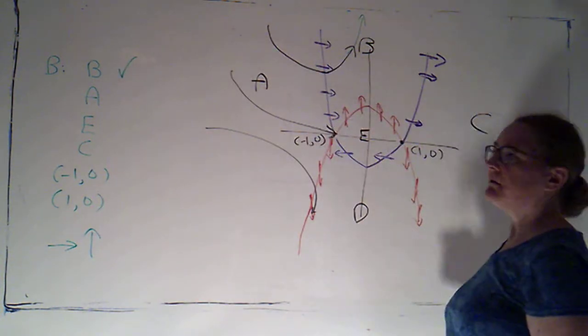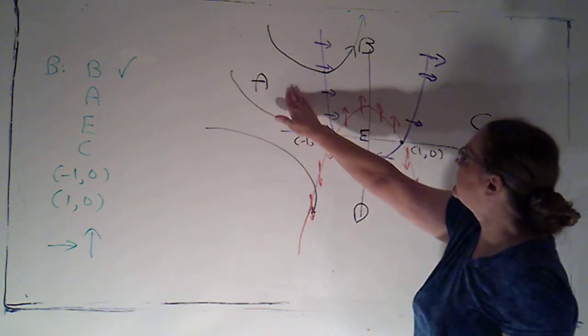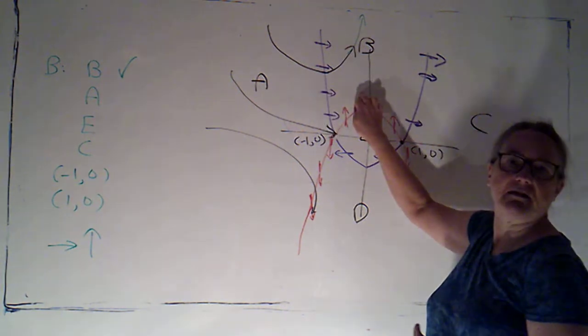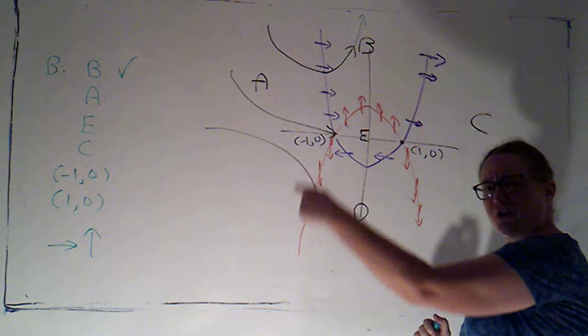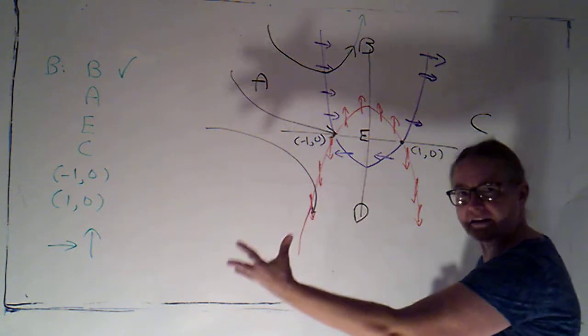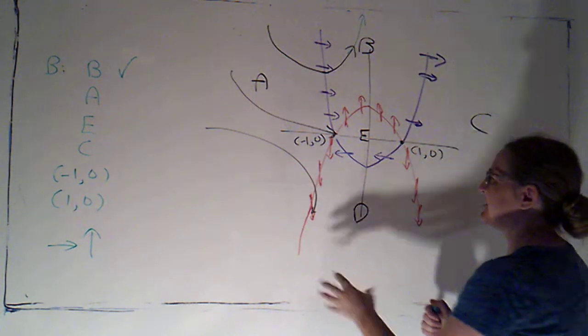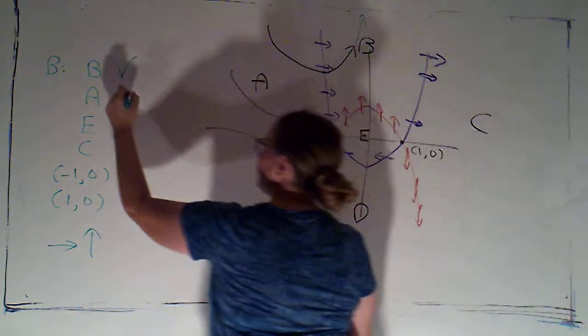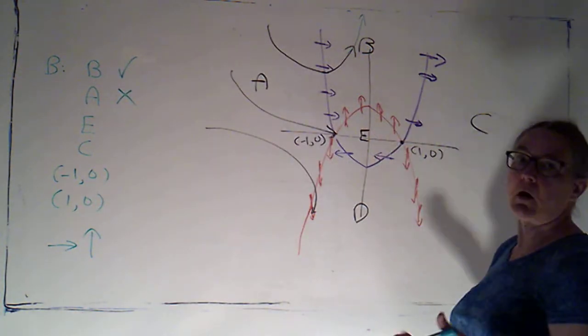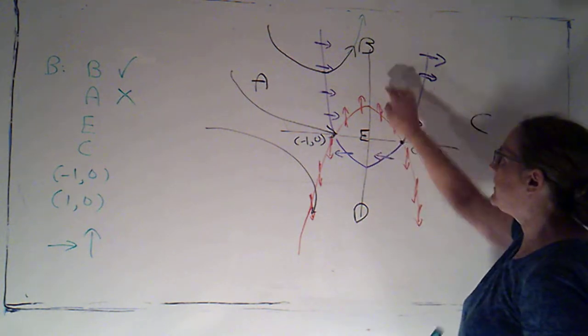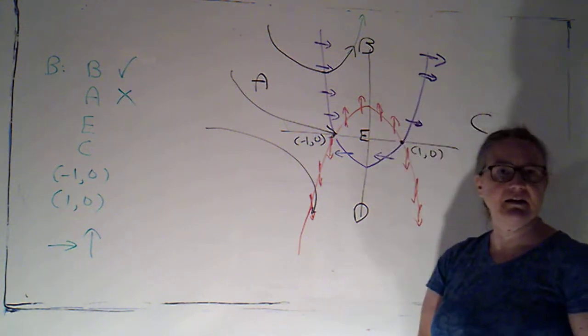Could I pass into A? No. A is to the left of B. These arrows are pointing to the right. That's a very straightforward relationship. Sometimes when I have curved null clines, what's to the left and what's to the right changes. But here, A is always to the left of B. No. Could I pass into E? No. E is always below B. The boundary between B and E is always pointing up.